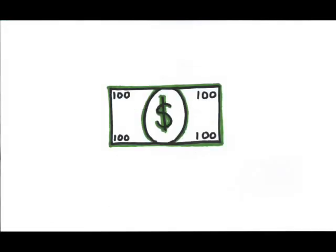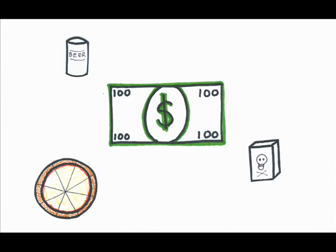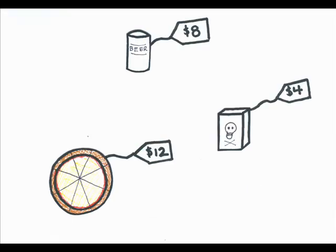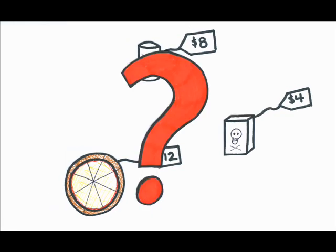Okay, look. Assume a consumer has a weekly income of $100, which he spends completely on three commodities – pizza, beer, and cigarettes. The price of pizza is $12, the price of beer is $8, and the price of cigarettes is $4. What combination of pizza, beer, and cigarettes is this consumer going to choose?